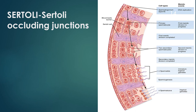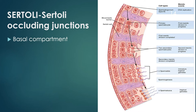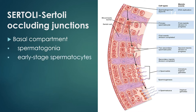Now let's talk about Sertoli-Sertoli occluding junctions. Two Sertoli cells form communications — the Sertoli-Sertoli occluding junctions — which establish the blood-testis barrier. In the basal compartment lies the primary spermatogonia or stem cells along with early-stage spermatocytes. The adluminal compartment contains the different later stages of your spermatocytes.